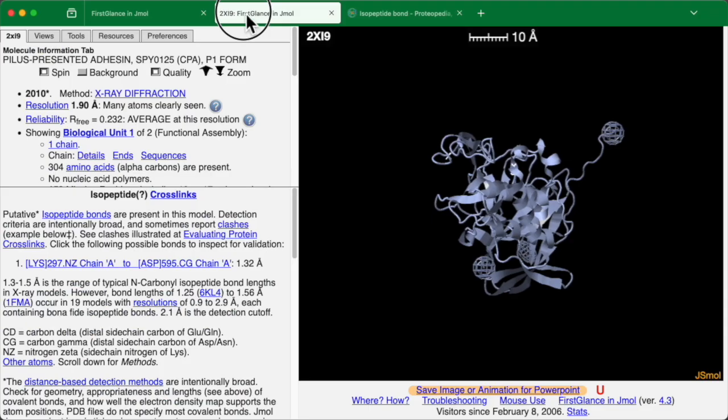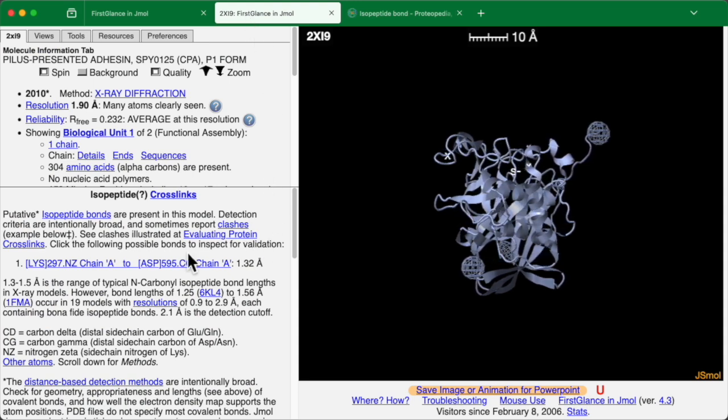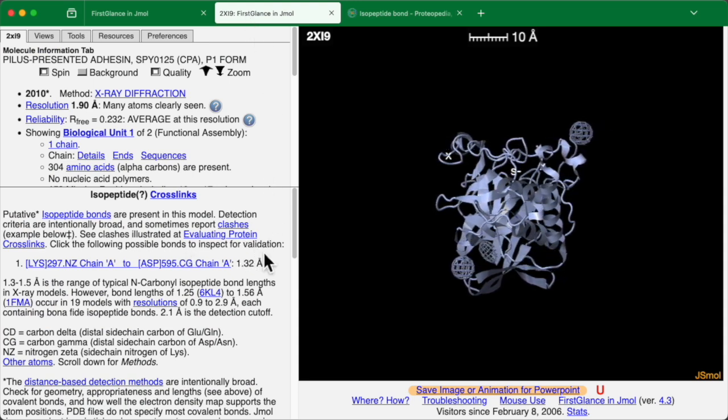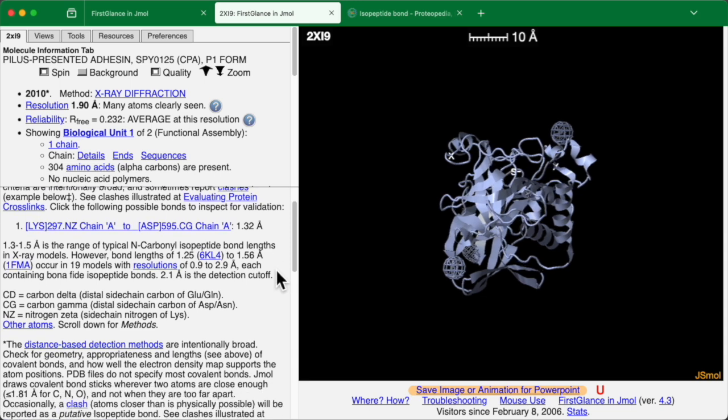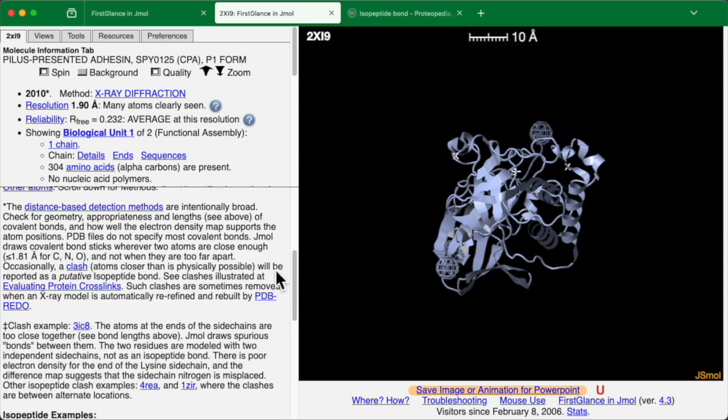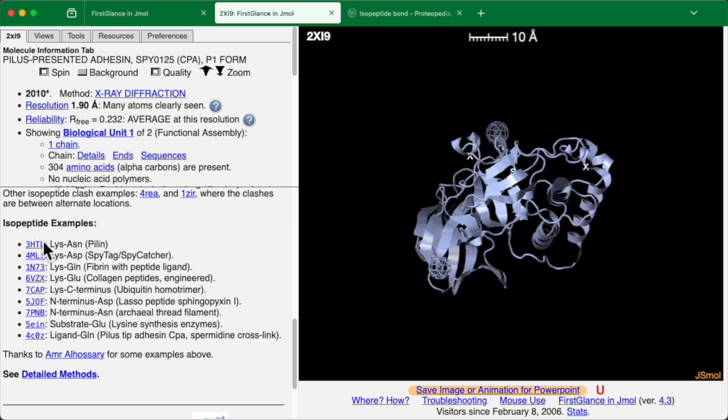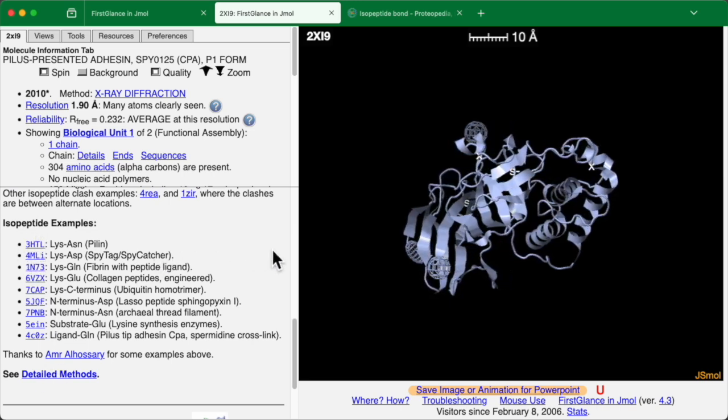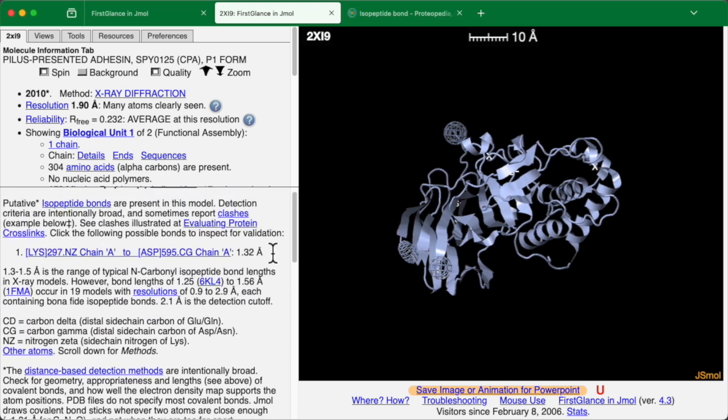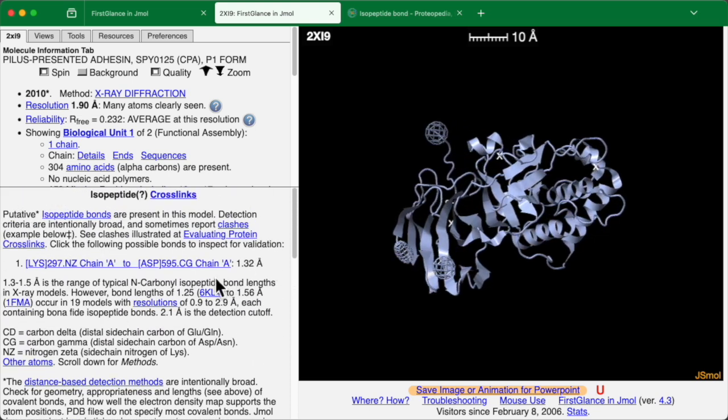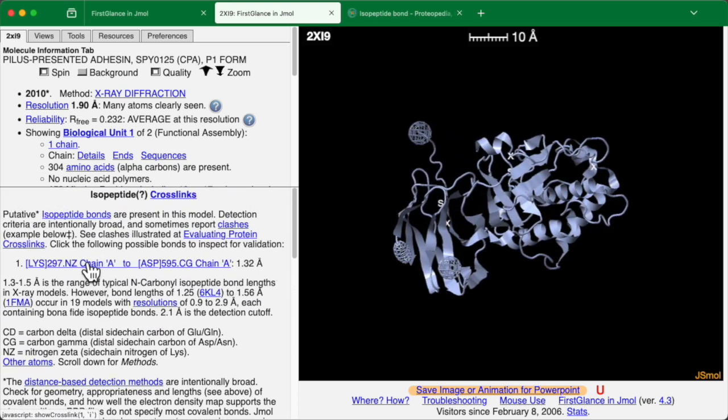Now we'll return to FirstGlance. And I want to point out that also typical of FirstGlance, if you scroll down in this help panel, there are many examples of molecules that have isopeptide bonds. So to explore the one that FirstGlance has suggested here, we'll click on this link.